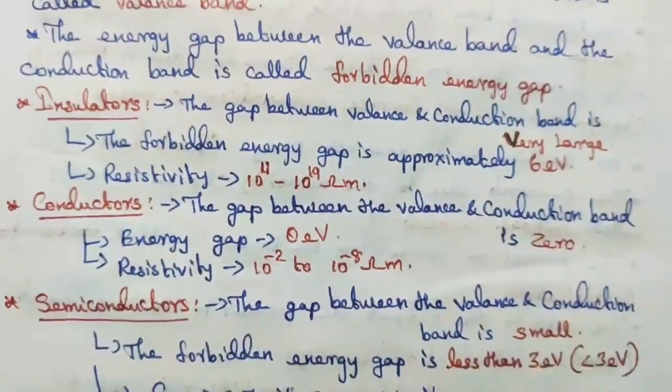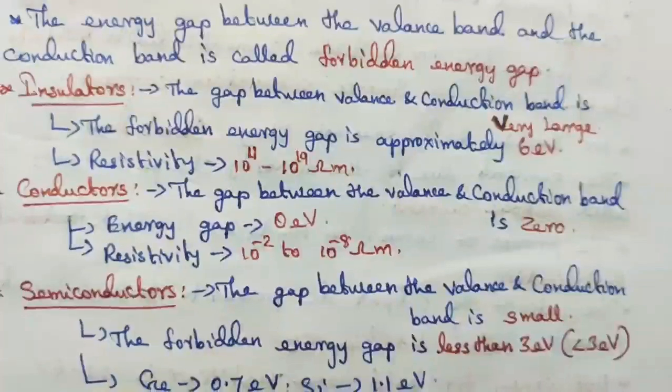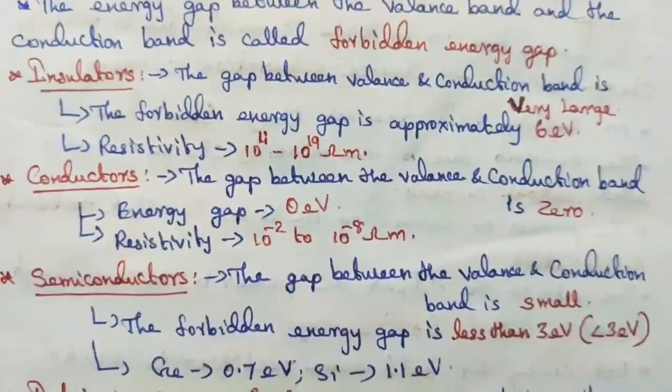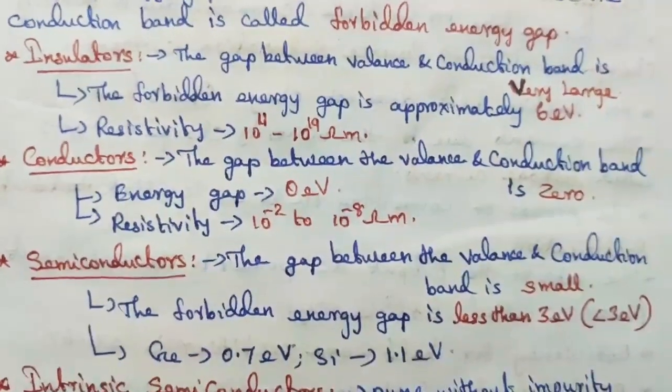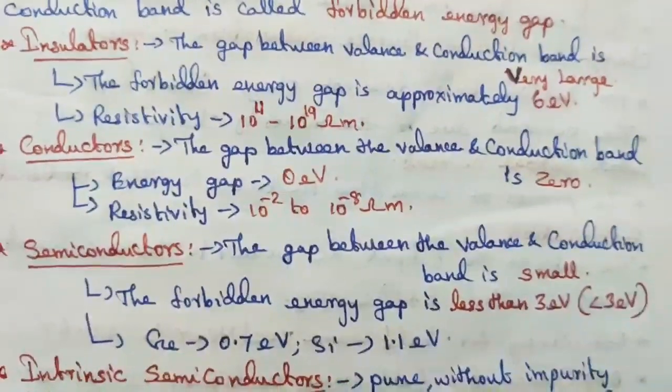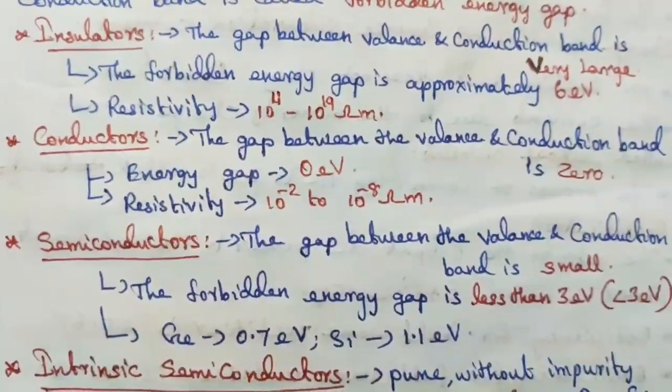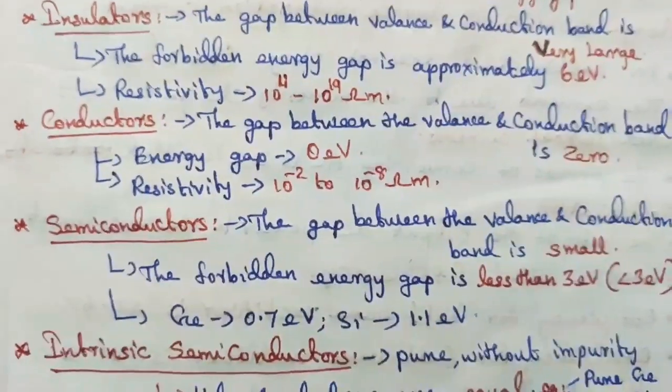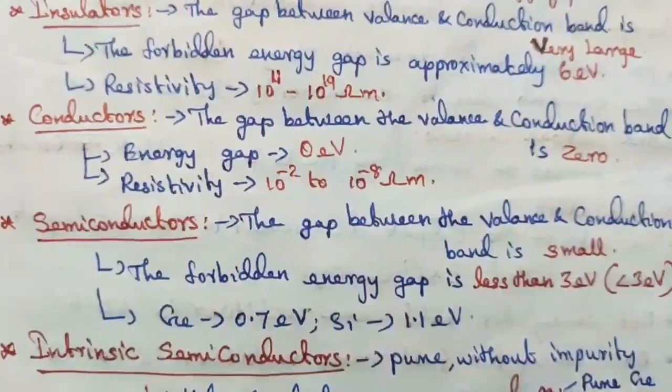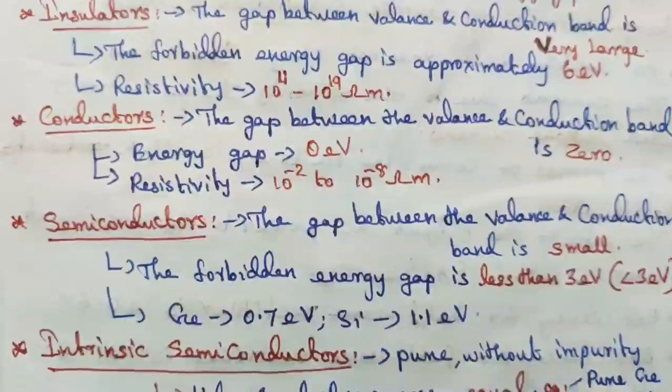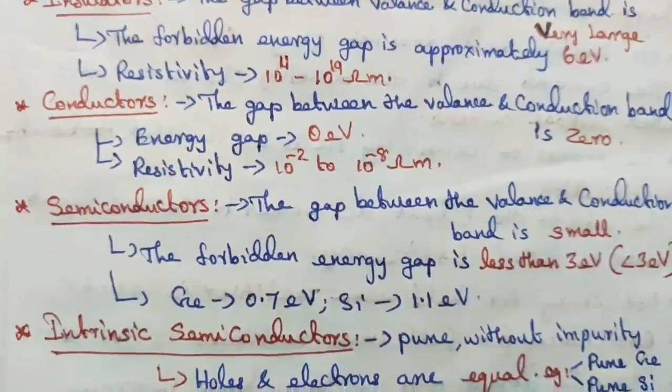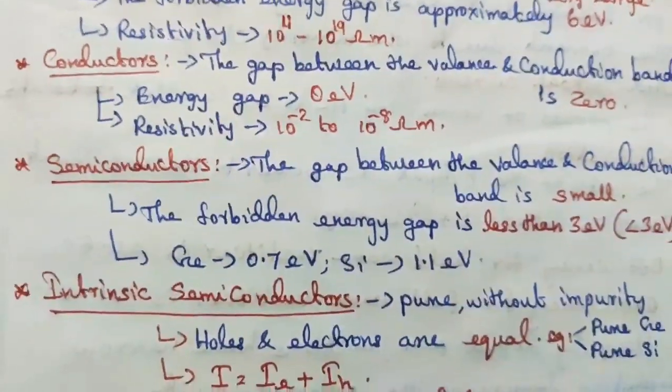In semiconductors, the gap between the valence band and the conduction band is small. The forbidden energy gap between these two bands is less than 3 electron volts. Two examples are germanium with forbidden energy gap of 0.7 electron volt, and silicon with 1.1 electron volt.